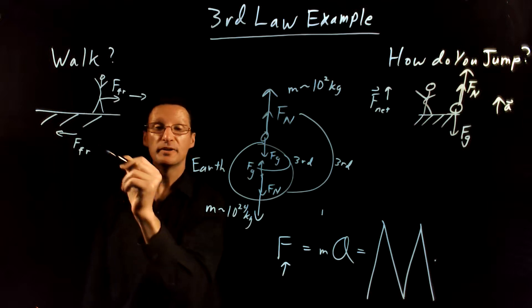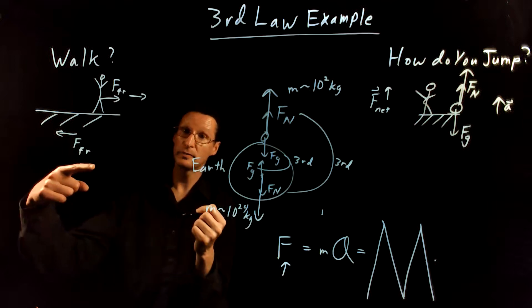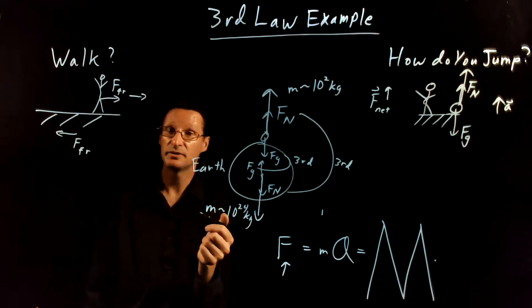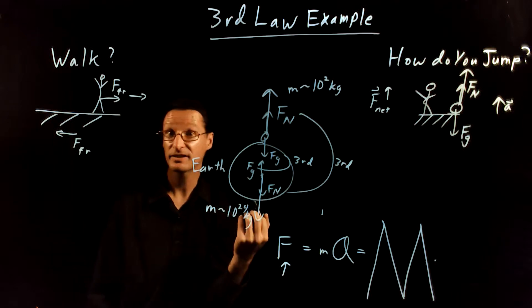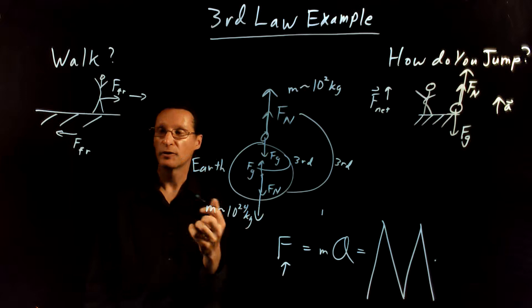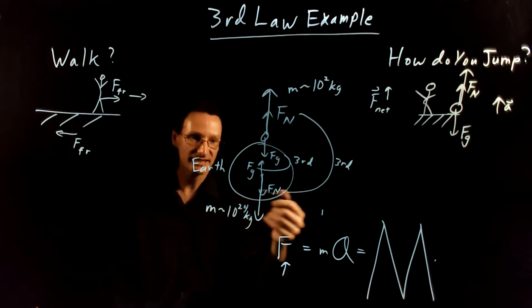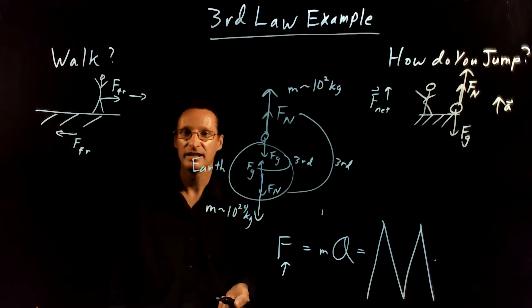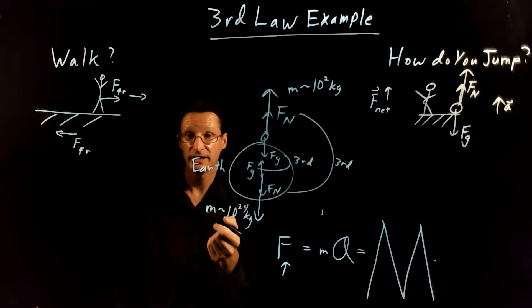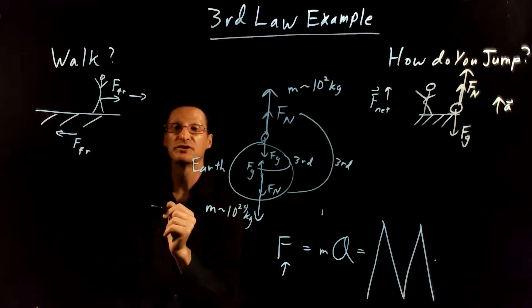The harder you push with friction this way on the ground, the harder the ground pushes back on you and causes you to accelerate. For example, if you want to be a sprinter. All right. Of course, you don't see the earth accelerate for the same reasons we just talked about here. You can have a very large acceleration, though, depending on how big of a force you put on the earth.